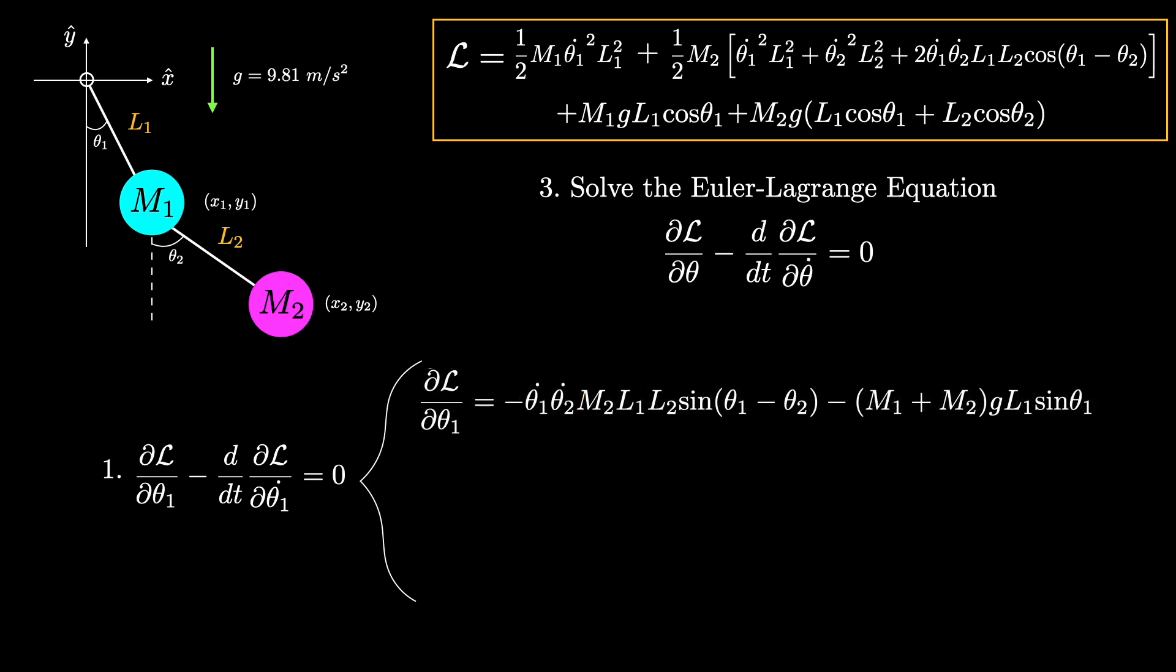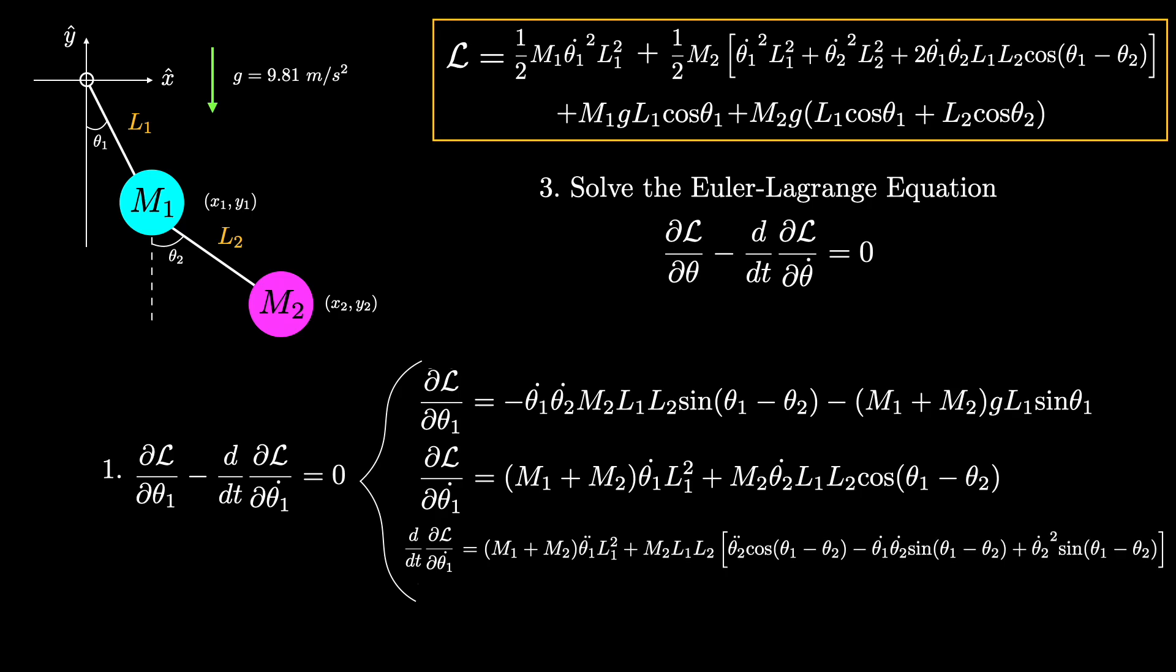For the second term, we'll first take the derivative of L with respect to theta1 dot. Again, we can cross out the twos and combine like terms to simplify. Next, we need to take the derivative of this with respect to time. All that's left is to subtract the bottom equation from the top equation, resulting in the Euler-Lagrange equation for theta1 equaling this.